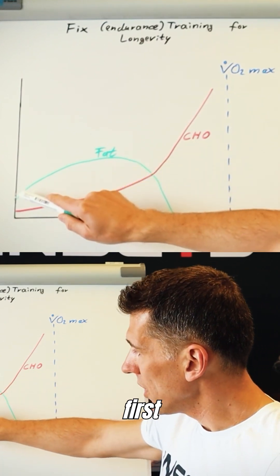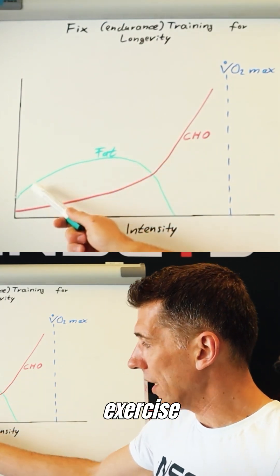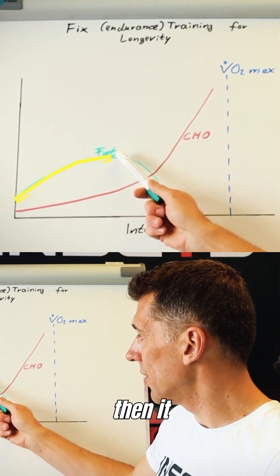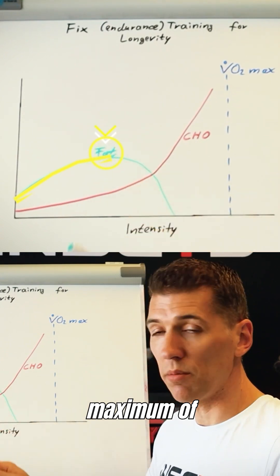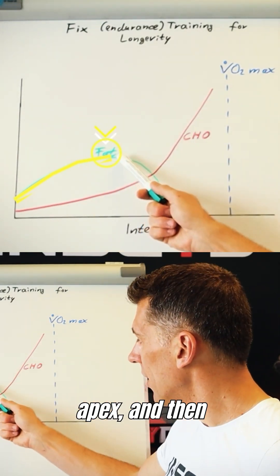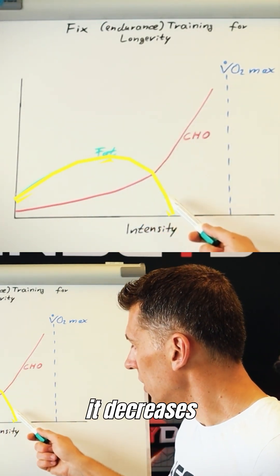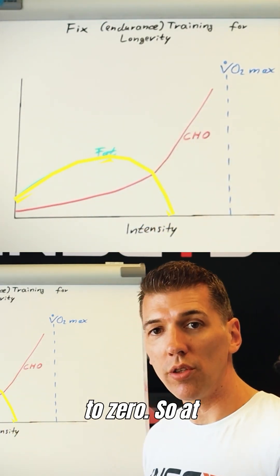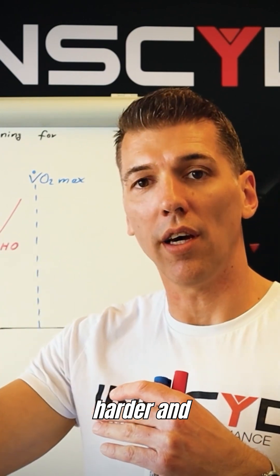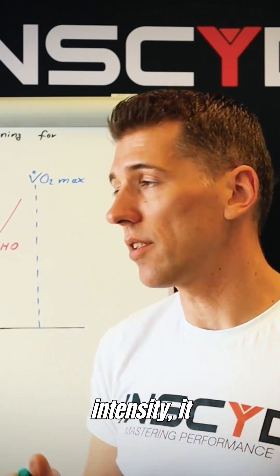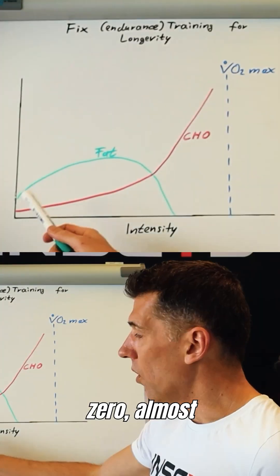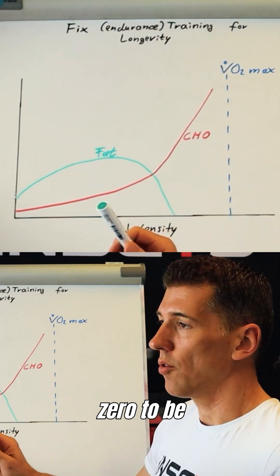The fat combustion rate first increases with exercise intensity, then it reaches a maximum — a plateau or apex — and then it decreases to almost zero. So at some higher exercise intensity, fat combustion decreases to essentially zero.